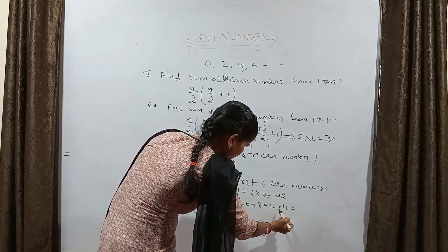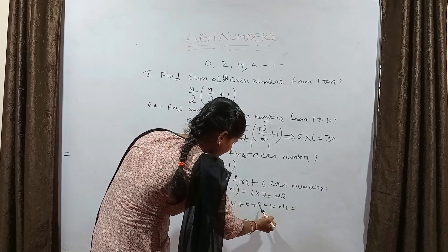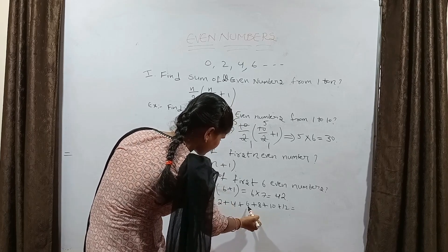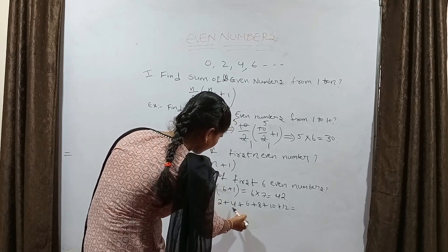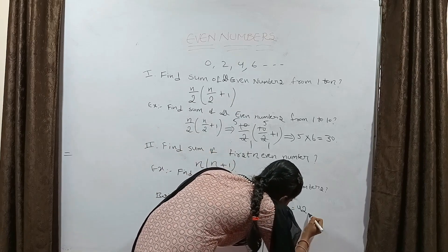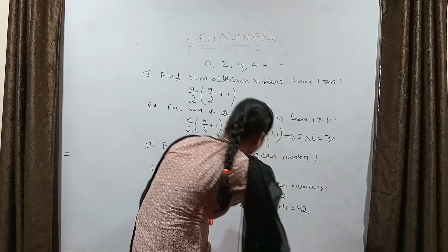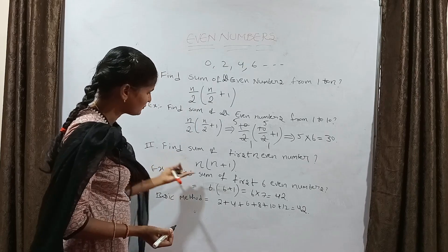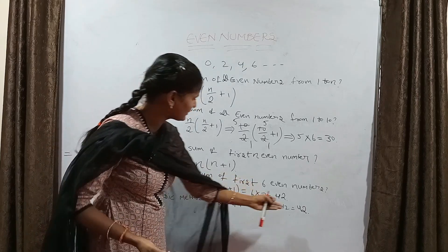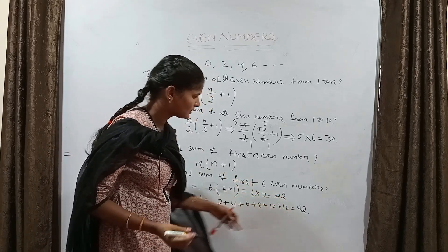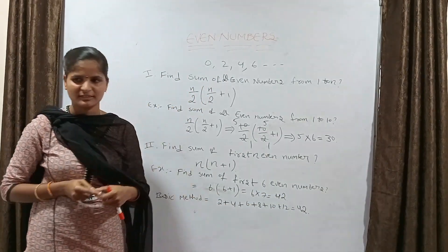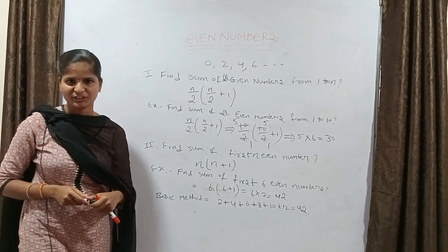Using the basic method: 2 plus 4 is 6, 6 plus 6 is 12, 12 plus 8 is 20 — wait, let me redo: 2, 4, 6, 8, 10, 12. Adding: 2 plus 4 is 6, plus 6 is 12, plus 8 is 20 — the basic addition also gives 42. Both methods give the same answer of 42. I hope all of you understand this problem. Thank you.